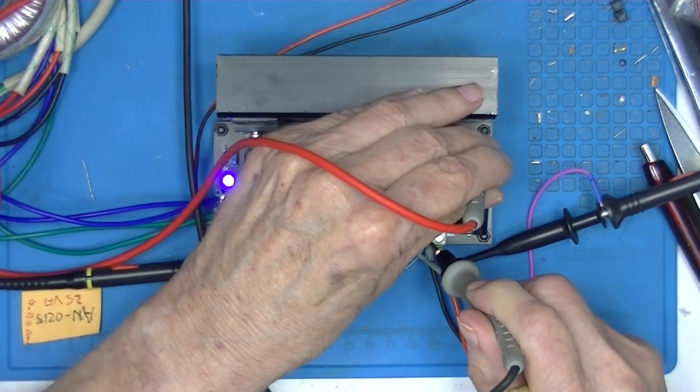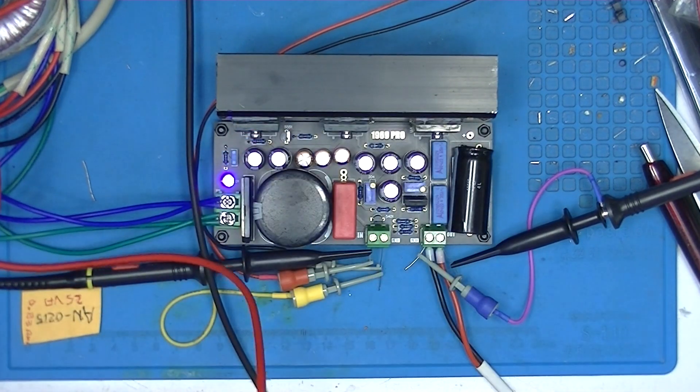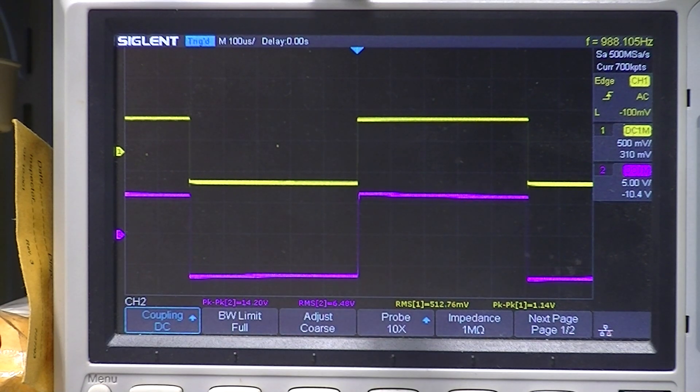So here we are looking at a 1000 Hertz square wave. Everything looks fine. Let me see if I can stay out of the way of this oscilloscope.